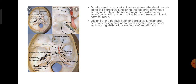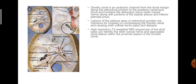That is Dorello's canal and Gruber's ligament. High-resolution T2-weighted MRI sequence of the skull base can identify the sixth cranial nerve and associated dural sleeve within the proximal aspect of Dorello's canal.